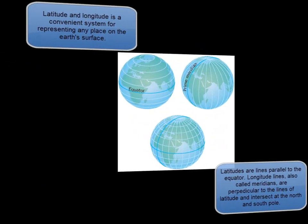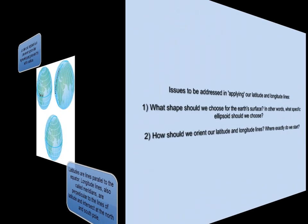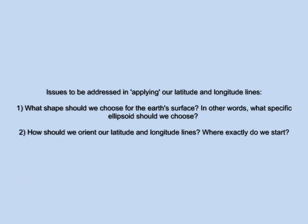We now turn our attention to horizontal coordinates. Latitude and longitude is a convenient system for representing any place on the Earth's surface. Latitudes are lines parallel to the equator, while longitude lines, also called meridians, are perpendicular to the lines of latitude and intersect at the North and South Pole. The latitude-longitude system requires a mathematically defined shape on which the parallels and meridians will exist and some defining origin and orientation parameters.